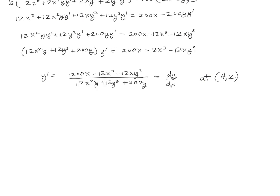We can now do a little bit of factoring. So y prime, we can factor out a 2 and an x, leaves us with 100 minus 6x² minus 6y². Down below, we can factor out a 2 and we can factor out a common y, leaves us with 6x² plus 6y² plus 100.